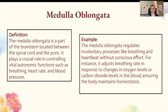Medulla oblongata. The medulla oblongata is a part of the brainstem located between the spinal cord and the pons. It plays a crucial role in controlling vital autonomic functions such as breathing, heart rate, and blood pressure — a term we also covered in 1.1. The medulla oblongata regulates involuntary processes like breathing and heartbeat without conscious effort. For instance, it adjusts breathing rates in response to changes in oxygen or carbon dioxide levels in the blood, ensuring that the body maintains homeostasis.